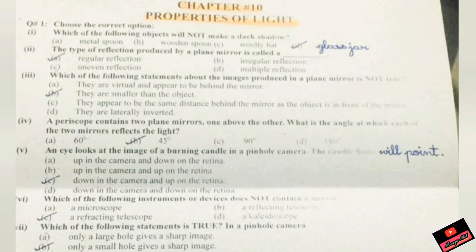Which of the following statement about the images produced in a plane mirror is not true? They are smaller than the object. You know that, that's why you can see your face easily on the mirror. Fourth one is: a periscope contains two plane mirrors. They are exactly making a 45 degree angle so that rays of light can be reflected in a straight line and the sailor in the submarine can easily see whatever is happening on the surface of the sea.